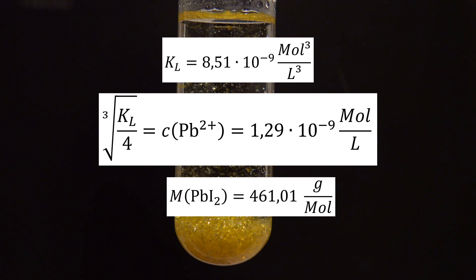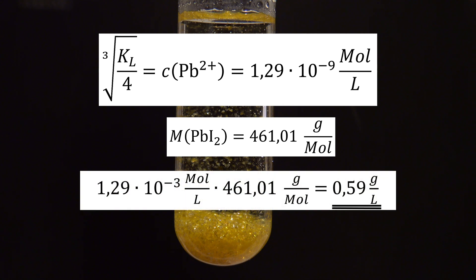When this is multiplied by the molar mass of lead iodide, the concentration of the saturated solution is calculated in grams per liter.